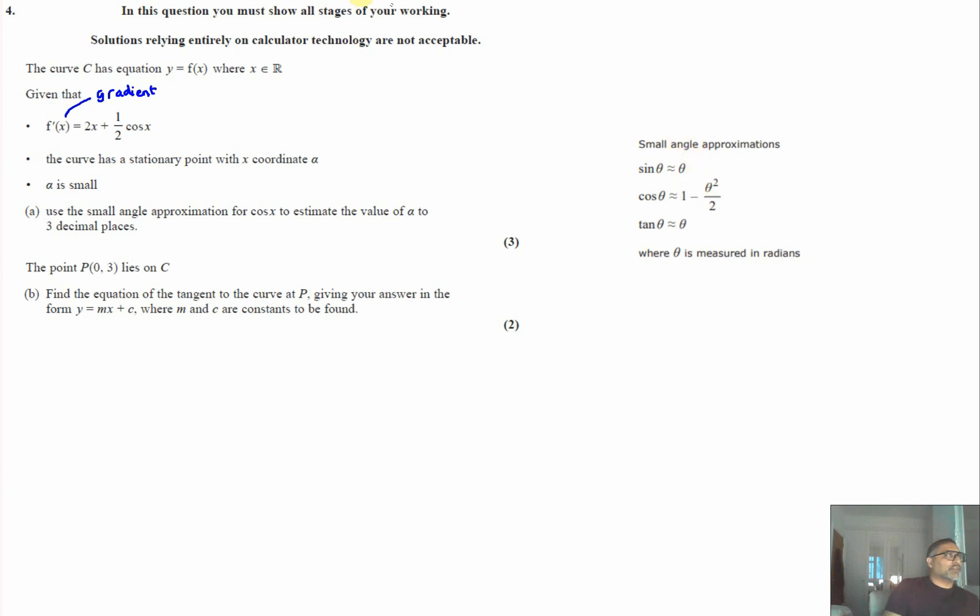We're told that the curve has a stationary point with coordinate alpha. At that point, if I work out f dash of alpha, that's going to be 2 alpha plus half cos alpha, and we know that at a stationary point, f dash of alpha will be equal to zero. At any stationary point on a curve, there is no gradient, so the gradient is zero. Therefore, 2 alpha plus half cos alpha is equal to zero.